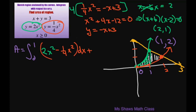Then we're going to add from 1 to 2. For this interval, the upper bound is the yellow, so you write negative x plus 3. The lower bound is the red, so you subtract minus 1/4 x squared dx.